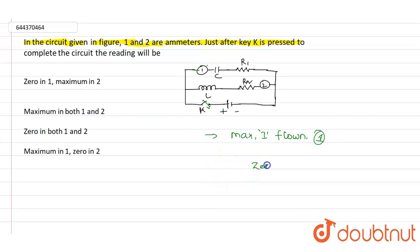Zero current will be flowing in the ammeter 2. So out of these four options, according to this statement, if you see maximum in 1 and zero in the second one, that means option D is the correct answer for this question. Thank you.